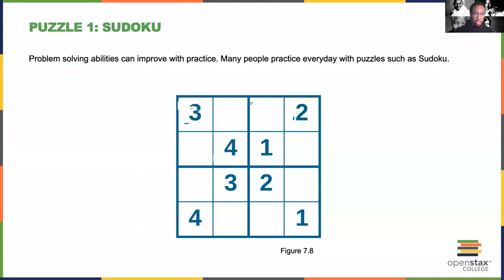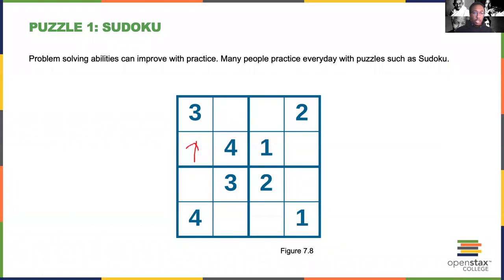If you look at the box on the top left, you'll see that it already contains numbers 3 and 4. So that means the remaining numbers to go in those two boxes are 1 and 2. You can see that by looking at rule number 1 that you can't put number 1 here because it is in the same row as another number 1. And you can't put 2 here because that would be in the same row as another number 2. So instead 2 must go here and number 1 must go here.